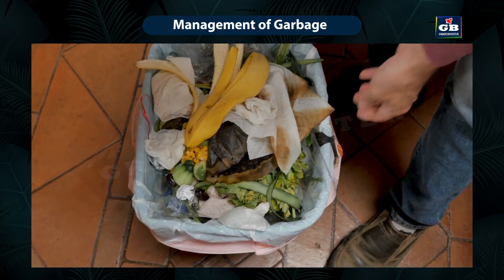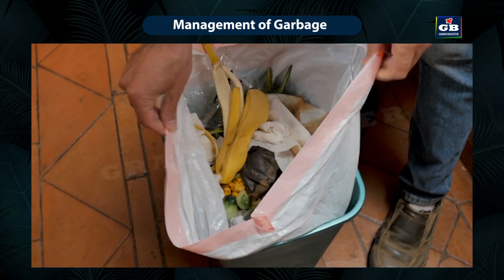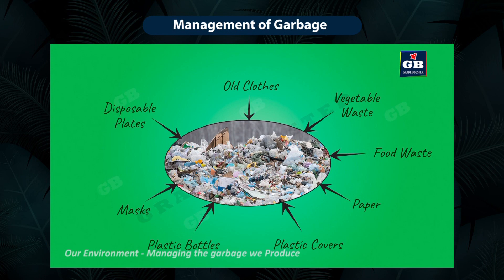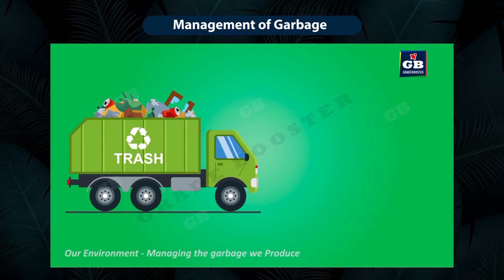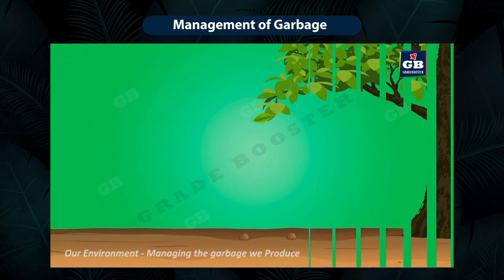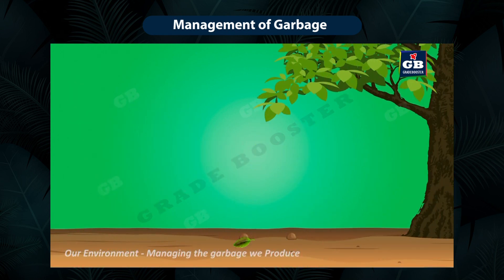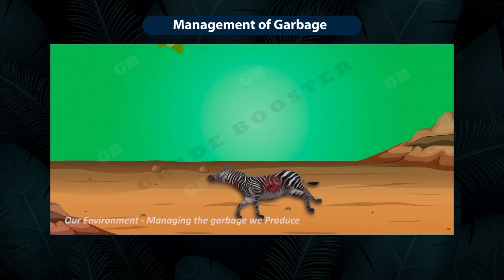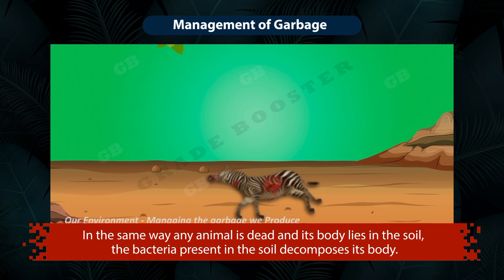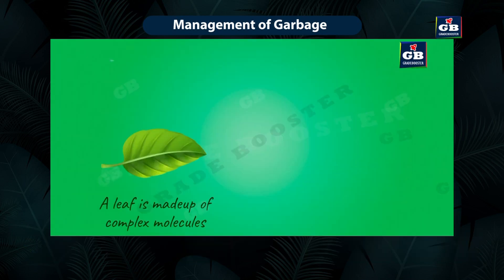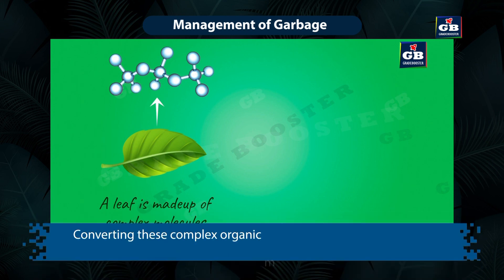The next environmental problem is garbage management. In our daily life we throw different kinds of waste — vegetable waste, leftover food, papers, plastic covers, disposable plates and cups, plastic bottles, old clothes, etc. You might have observed that the garbage vehicle collects garbage in two separate categories: one, biodegradable waste, and two, non-biodegradable waste. If you observe the leaves that fall in the soil, they slowly mix up with the soil in a few days. The bacteria present in the soil decomposes the leaves. In the same way, when an animal dies and its body lies in the soil, the bacteria present in the soil decomposes its body.